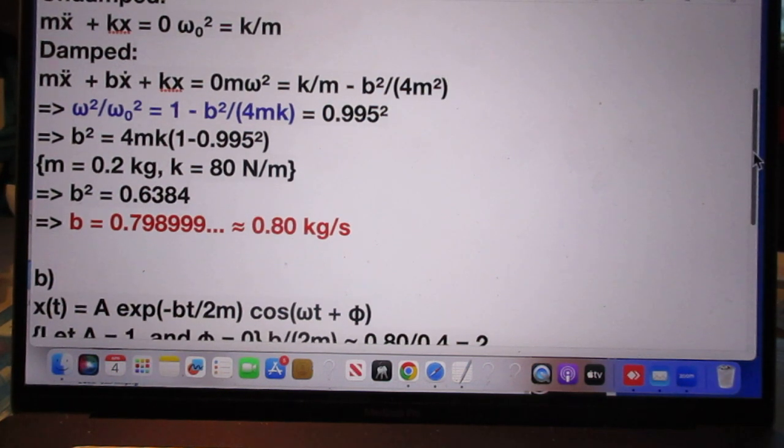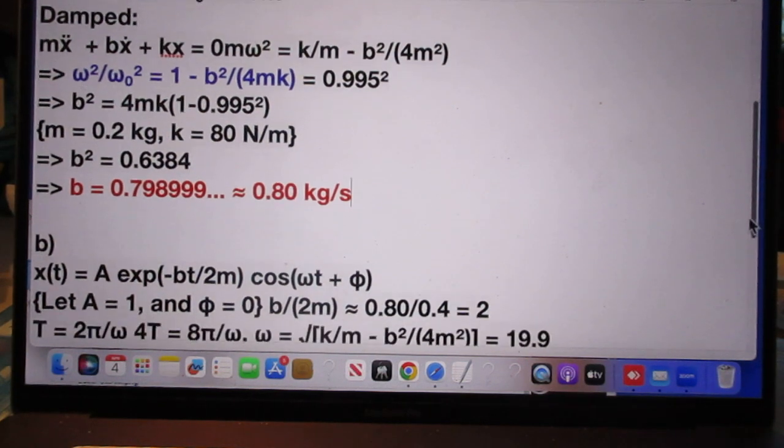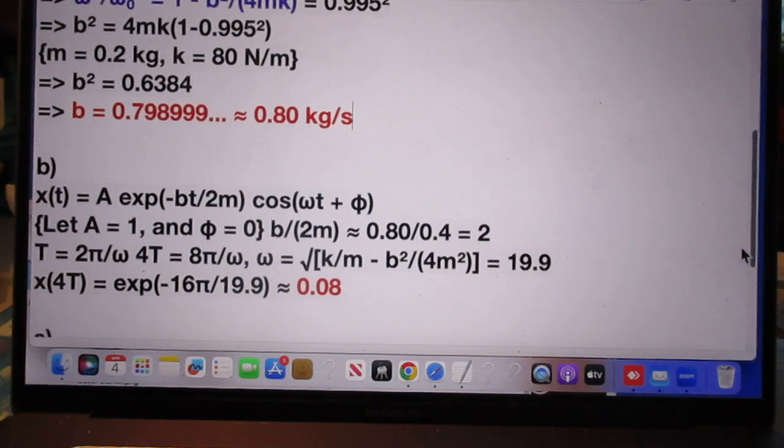So his answer to A is correct, of course, and this is where he made the typo. I think he had 4M square here. So we go B, 0.08, C.